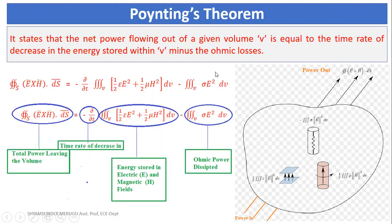We will see each and every term in the mathematical expression. The left-side term, surface integral of E̅ × H̅ · dS̅, indicates the total power leaving the volume. The −∂/∂t stands for the time rate of decrease, and the volume integral of (1/2 ε E² + 1/2 μ H²) dv stands for the energy stored in electric and magnetic fields. The volume integral of σ E² dv stands for the Ohmic losses. Now we will see the proof.